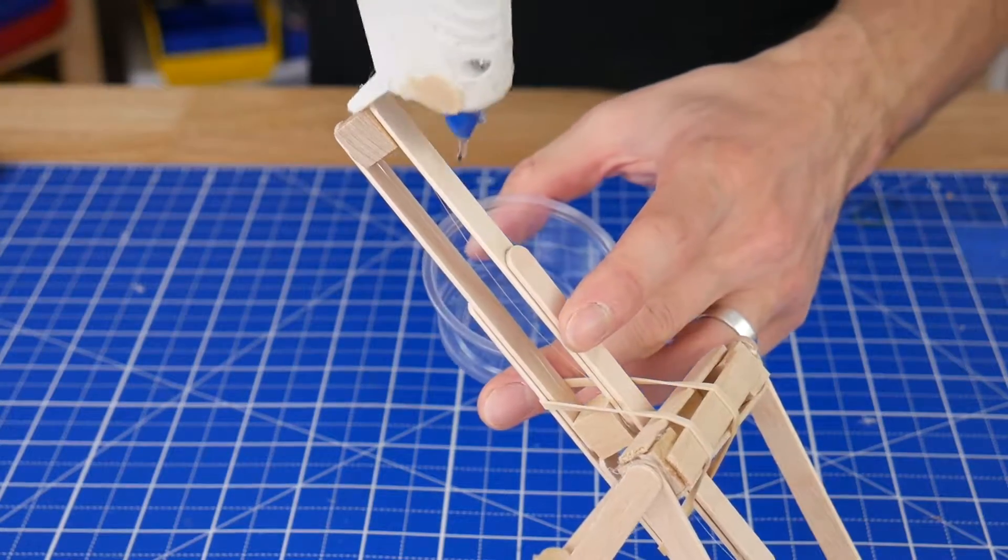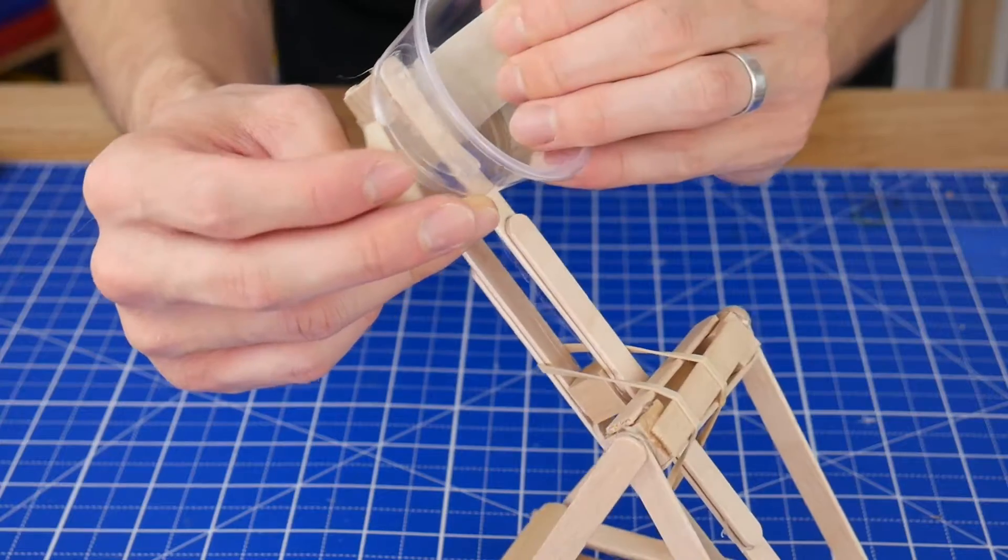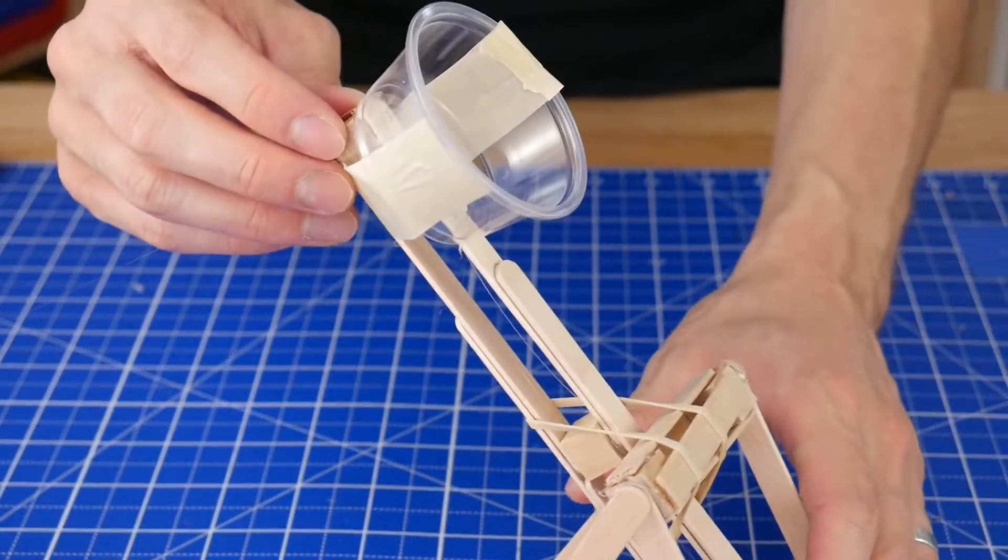The last step is to both glue and tape a plastic cup on. If you use just glue or just tape, then the cup will break off when the catapult is launched.